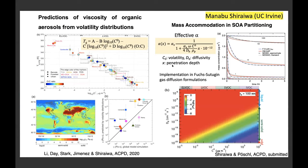Two recent studies: first, predictions of viscosity of organic aerosols from volatility distributions. Previously, we calculated glass transition temperature based on elemental composition, but now we have an equation as a function of volatility and O:C ratio — lower volatility leads to higher viscosity, consistent with global distributions. Second, on mass accommodation coefficients: the mass accommodation coefficient is often assumed without specifying how deep a molecule penetrates. We developed a method accounting for penetration depth, and find that for semi-volatile and intermediate volatility compounds, alpha could be significantly reduced. This work is appearing in ACPD.